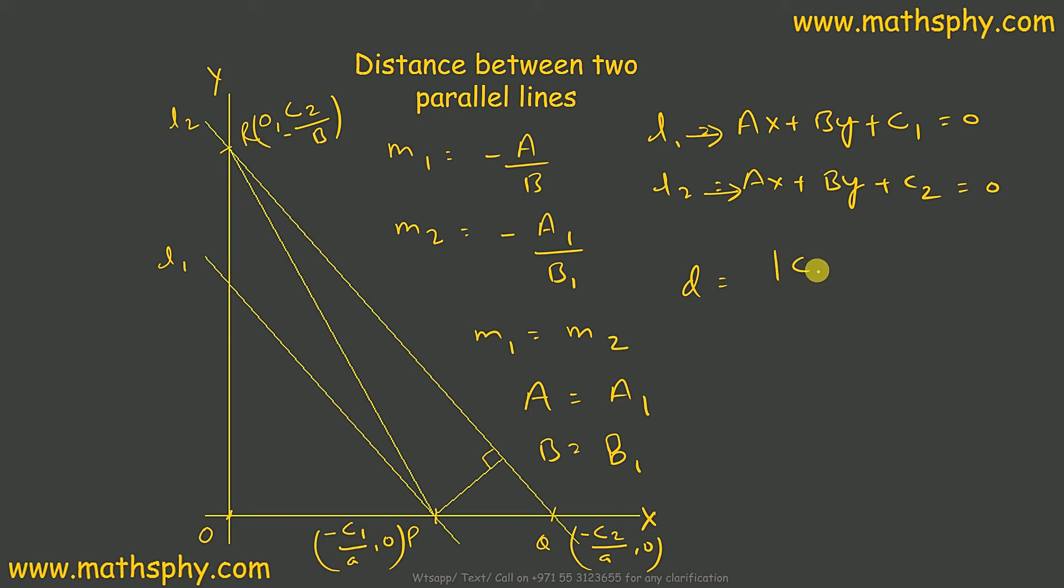If you use the same method you will arrive at d equals modulus c1 minus c2 over root a squared plus b squared. This is c1 minus c2 or c2 minus c1 over root a squared plus b squared.